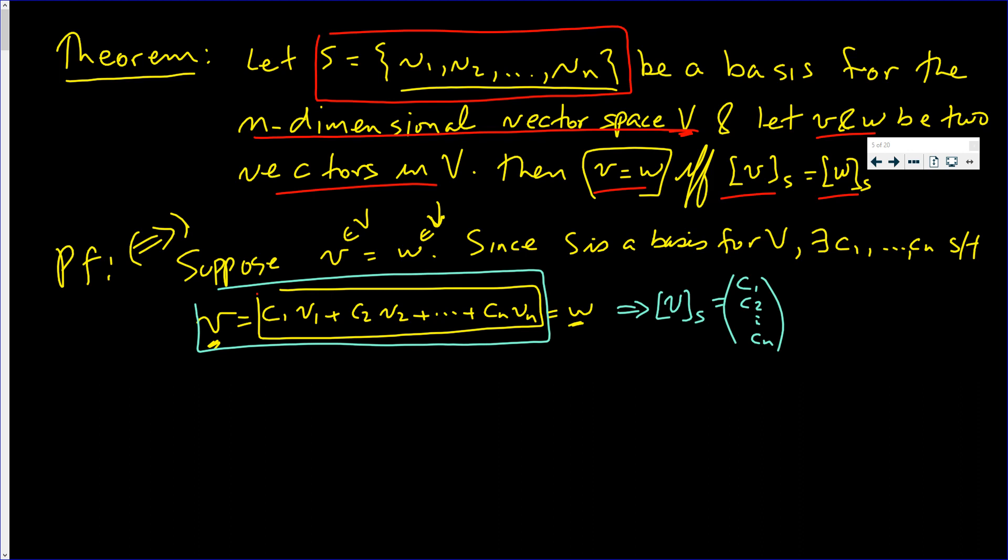However, if you look at this, this says that the coordinate of w in basis S also equals c1, c2, down to cn. So that implies that the coordinates of v in S is equal to the coordinates of w in S.